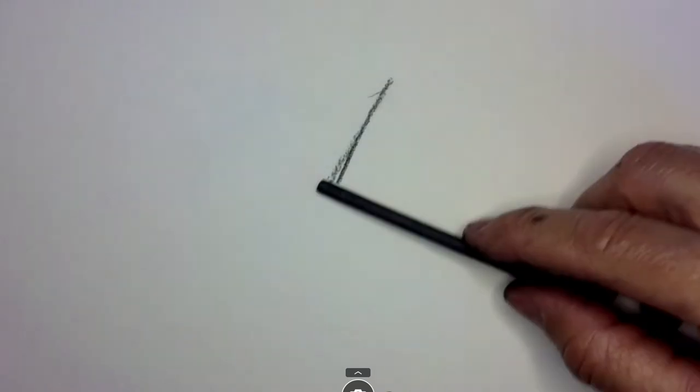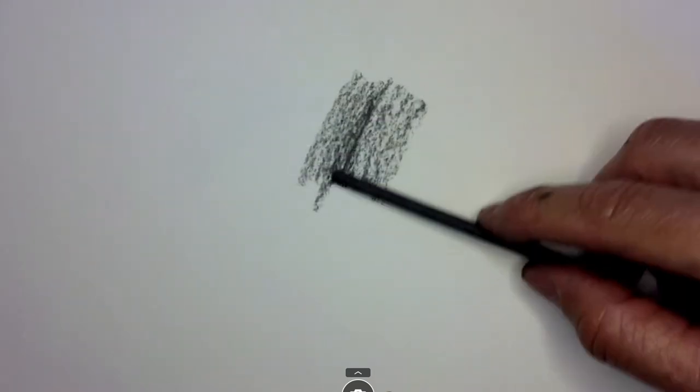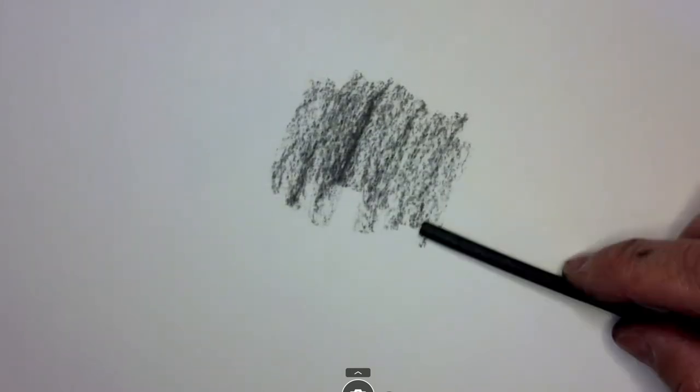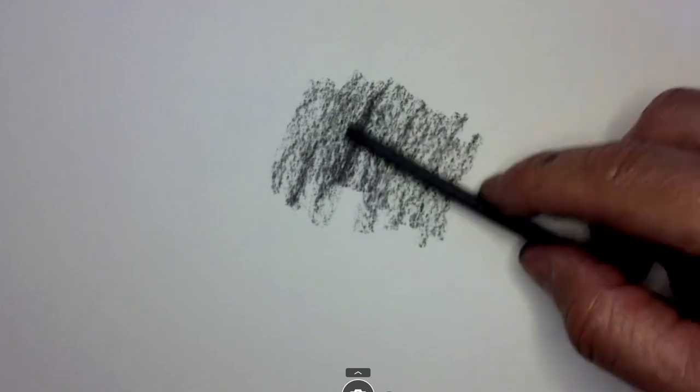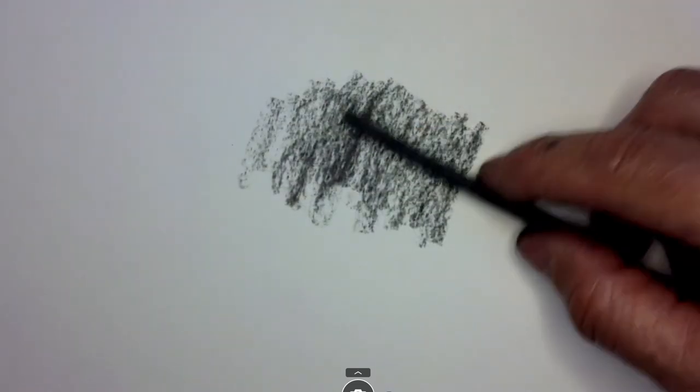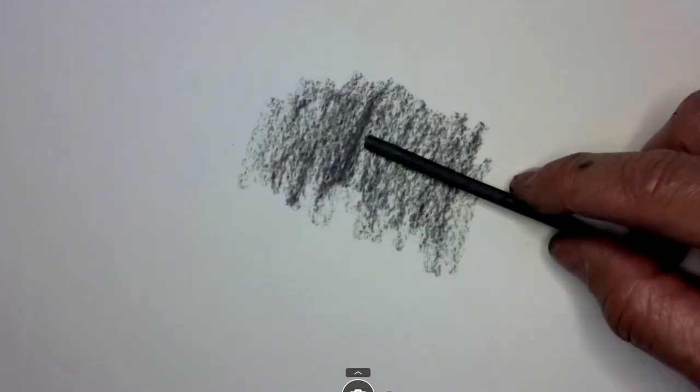Willow has a nice light velvety appearance, and what you're seeing is the texture of the paper. I'm not pressing very hard, so the charcoal is hitting the tops of the paper's texture and not the valleys.